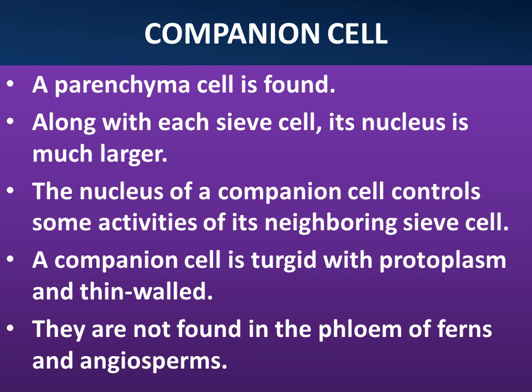Companion cell: a parenchyma cell is found along with each sieve cell, and its nucleus is much larger. The nucleus of a companion cell controls some activities of its neighboring sieve cell. A companion cell is turgid with protoplasm and thin-walled. They are not found in the phloem of ferns and gymnosperms.